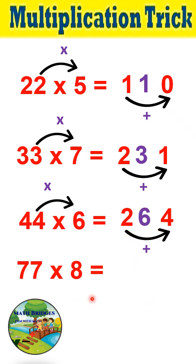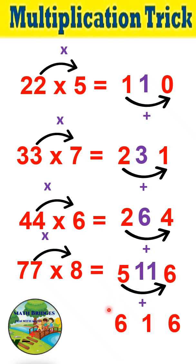77 times 8. First step: 7 times 8 is 56. Leave space and write. Now 5 plus 6 is 11. Here observe it's 11, a two-digit number. So what we do is add this 1 to the 5, so 5 plus 1 is 6. Therefore, 616 is the product.